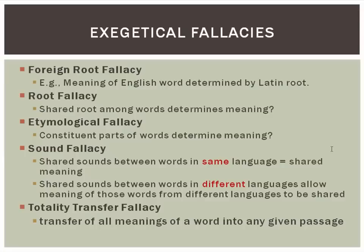So I have here five of the more common fallacies. The foreign root fallacy — the idea that we get the meaning of a particular English word based upon its Latin or Greek root that you can find in Webster's Dictionary. Then there's the root fallacy — the idea that a shared root among several words somehow determines the meaning of those words. Then there's the etymological fallacy, where supposedly the constituent parts of words, when you take them apart and put them back together, determines the meaning of the word.